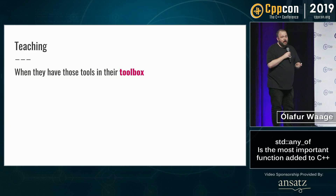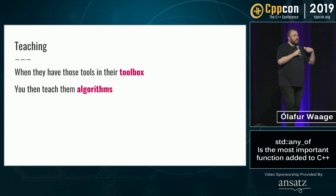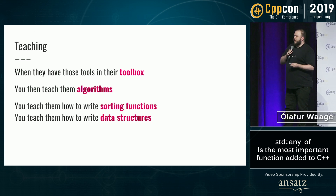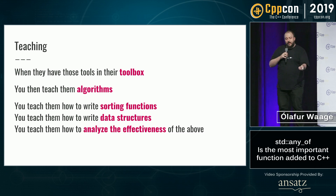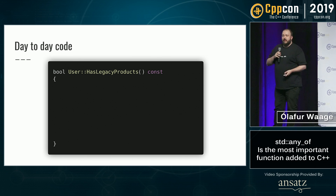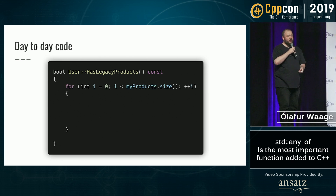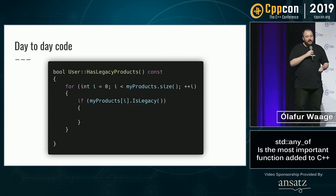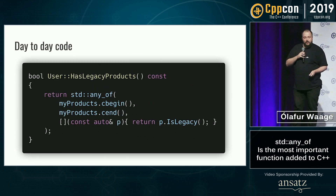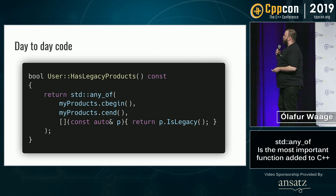When students have those tools in their toolbox during their education, you can teach them algorithms — how to write sorting functions, data structures, and how to analyze the effectiveness of everything. But once they're in the real world, a lot of day-to-day code isn't revolutionary. You have a user, you need to ask if the user has legacy products, you make some sort of loop, you ask some sort of question, and then you return some sort of Boolean. And of course, this can be converted to std::any_of, and rightly so.